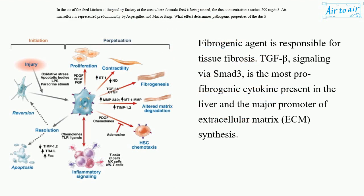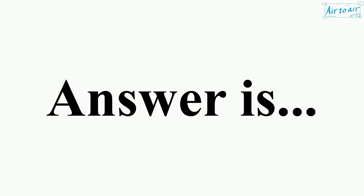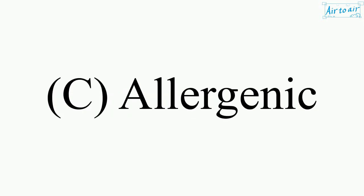A fibrogenic agent is responsible for tissue fibrosis. TGF-beta, signaling via SMAD-3, is the most pro-fibrogenic cytokine present in the liver and the major promoter of extracellular matrix (ECM) synthesis. The answer is C. Allergenic.